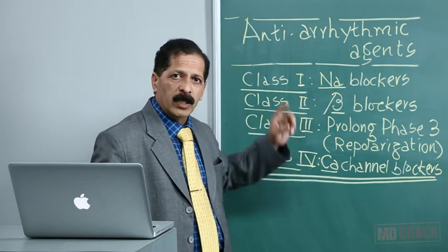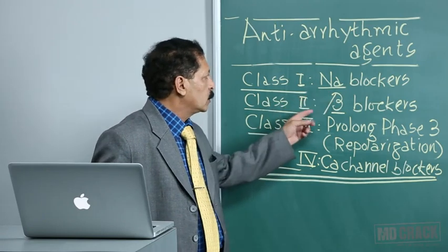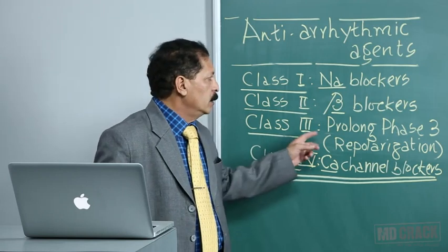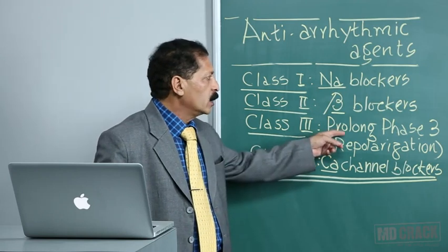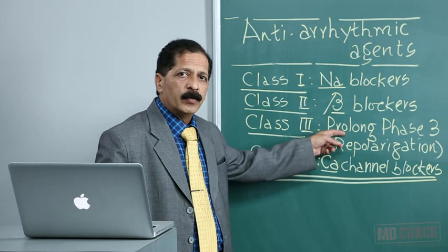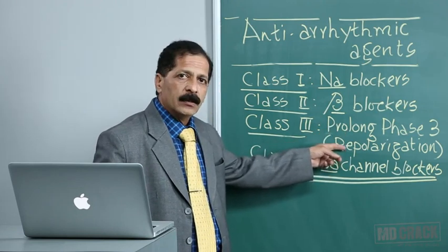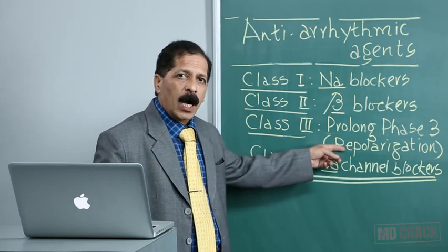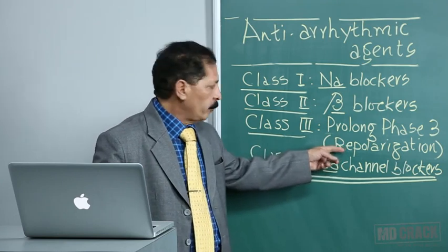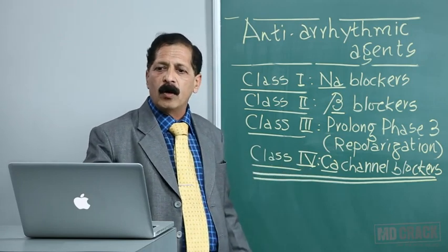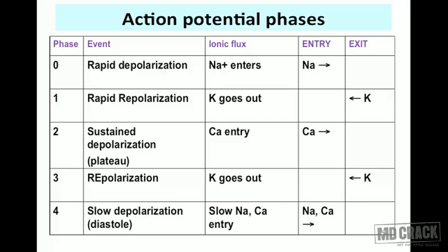To summarize: Class 1 blocks sodium channels, Class 2 are beta blockers, Class 3 agents prolong phase 3 of the action potential — the repolarization phase produced by the outward potassium current — and Class 4 are calcium channel blockers.